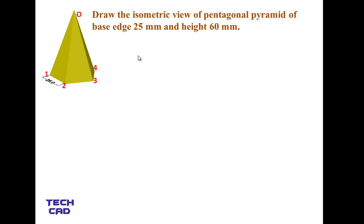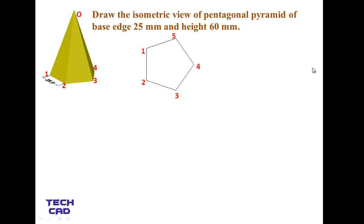First of all, we have to make the orthographic view of this pyramid from the top side. This is the top view of the pentagonal pyramid — I'll draw only the base. This is the nomenclature of the base and the dimension of the pentagon.